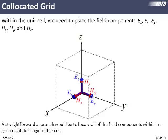If we didn't know better, it would make sense to locate all six unknown field components — Ex, Ey, Ez, Hx, Hy, Hz — all at a common point within our grid unit cell. This is called a co-located grid, and it turns out it has a lot of problems. We're not going to do that; instead we'll do something a little more complicated and stagger the positions of all six field components at different points.